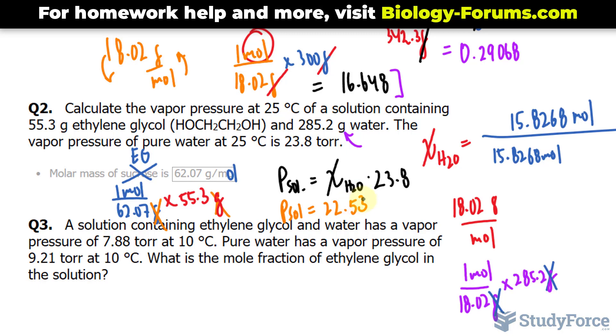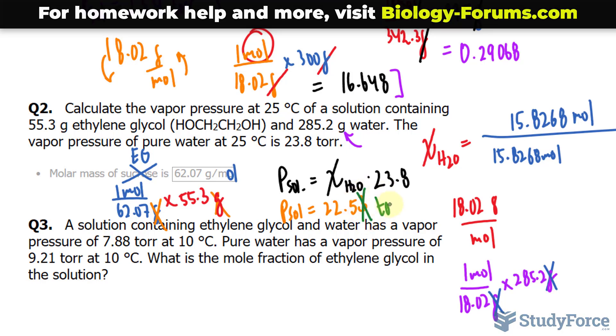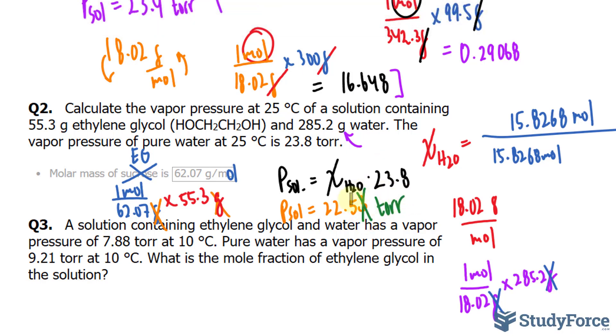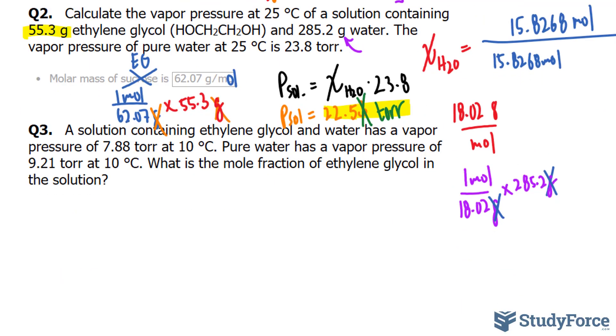We should stop writing after this five, and the units are torr. So, what I'm highlighting right here is the pressure when ethylene glycol is added, namely 55.3 grams of it. That's the answer to question number two.